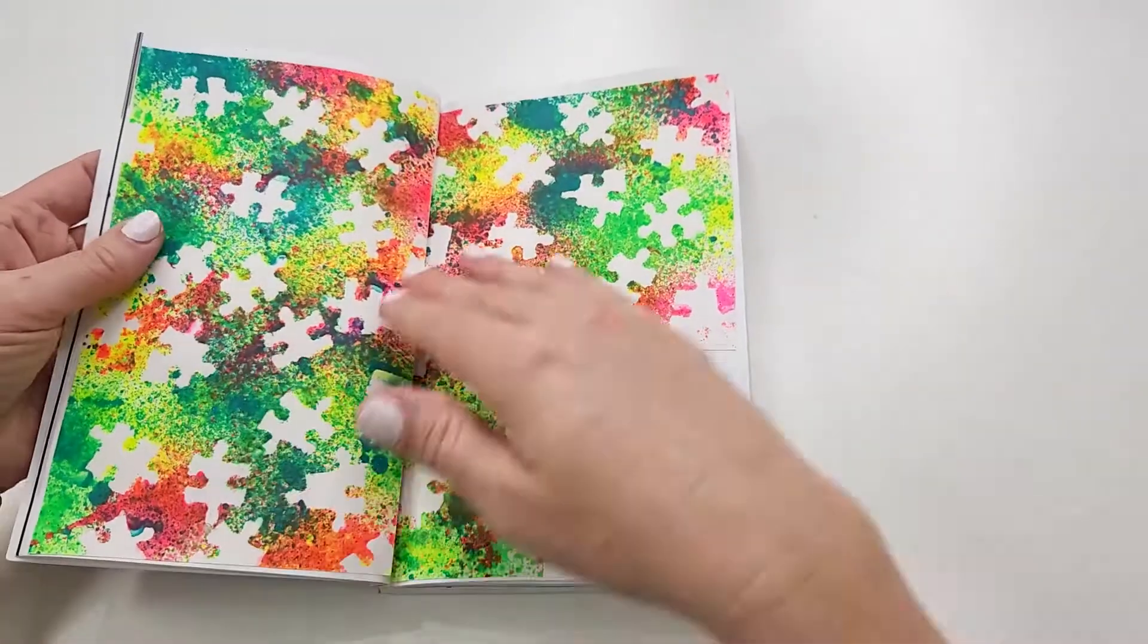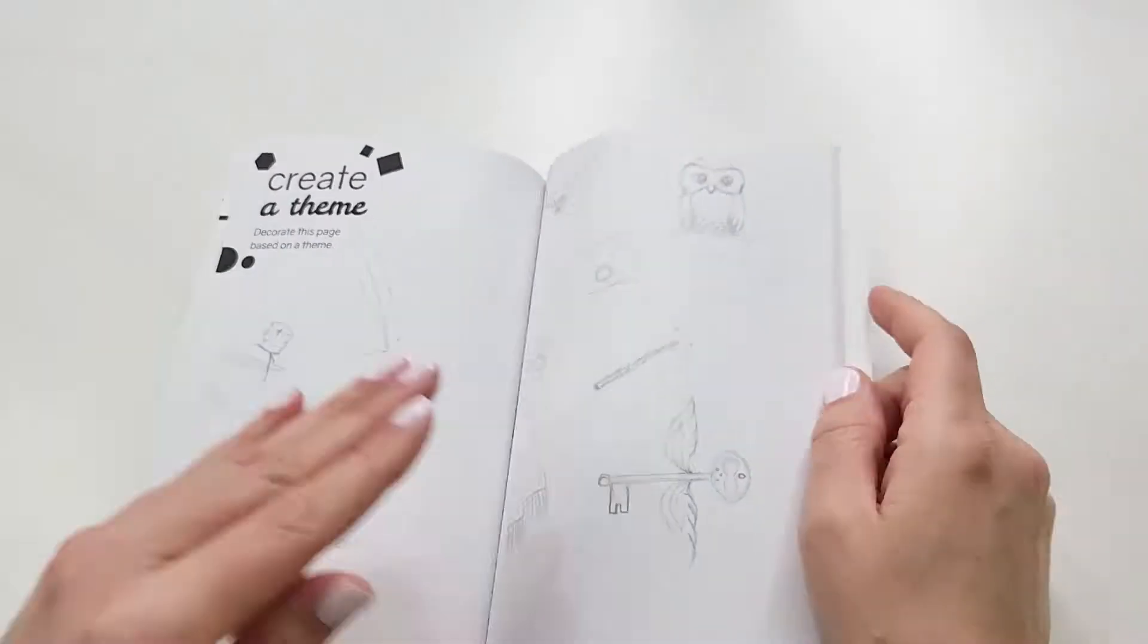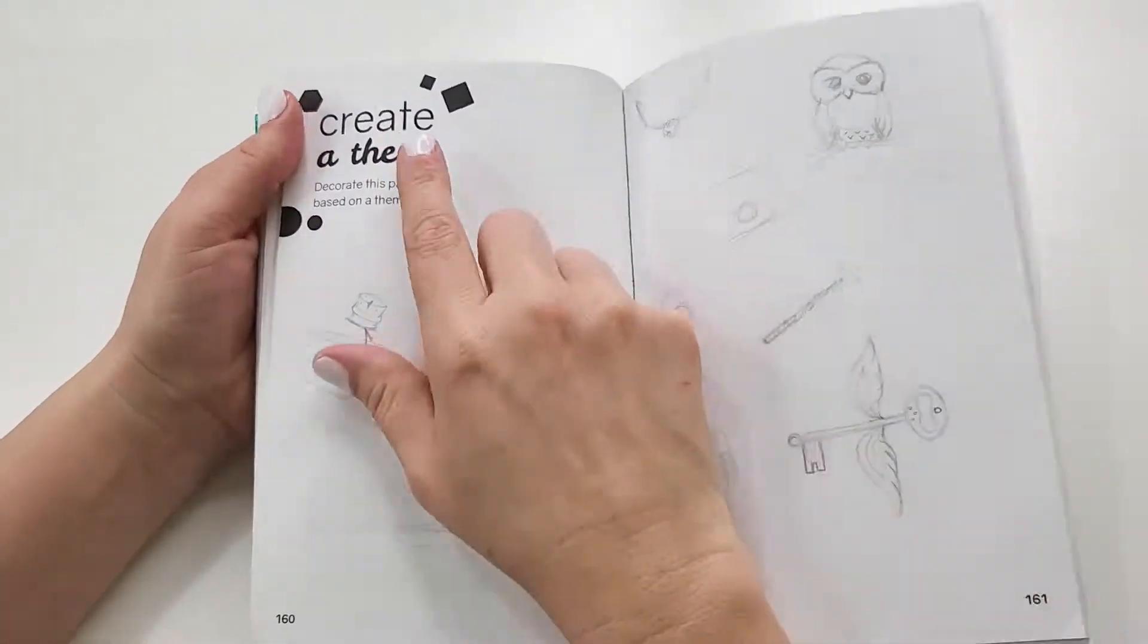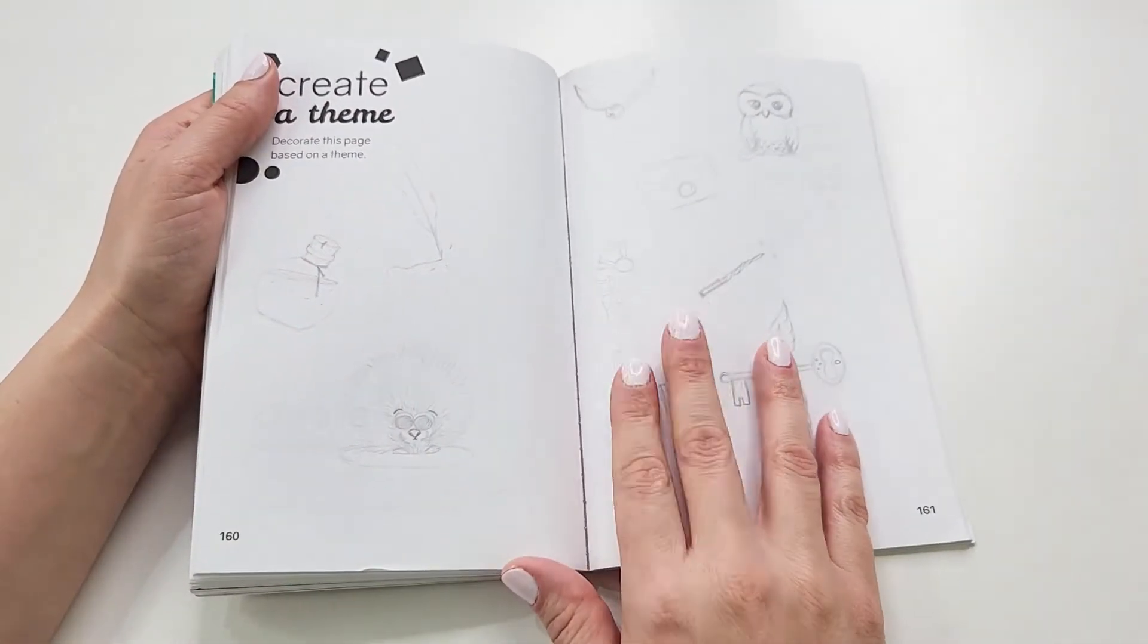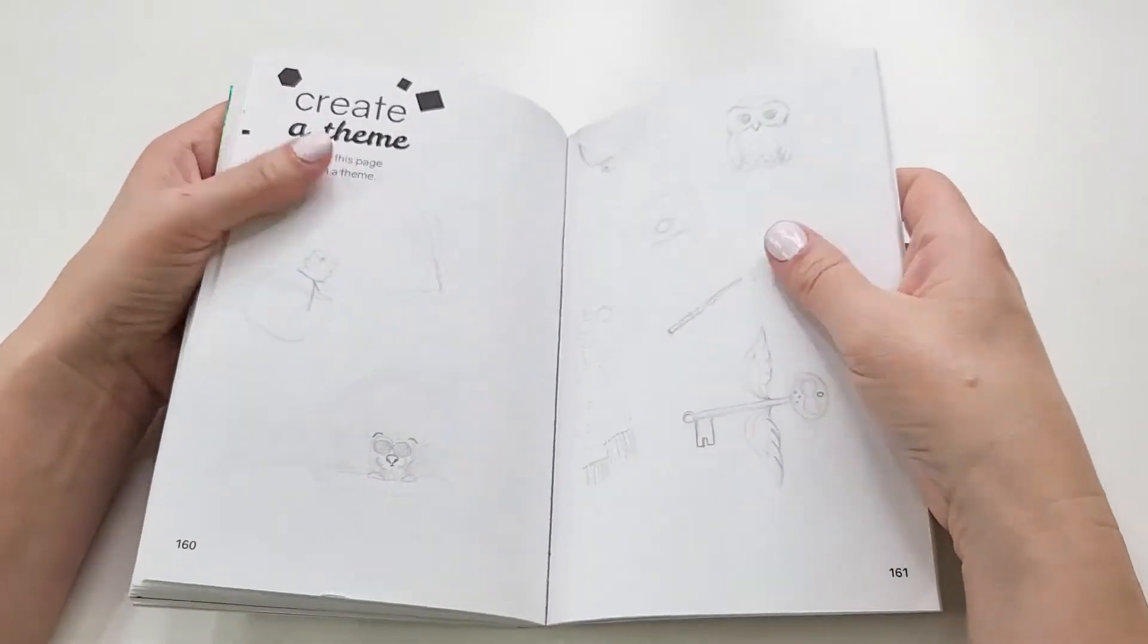The first prompt I want to tackle is one I already started but didn't finish. Create a theme. I'm not totally in love with the sketches I did, but I do like the concept. So I'm going to redo the sketches and give them some color.